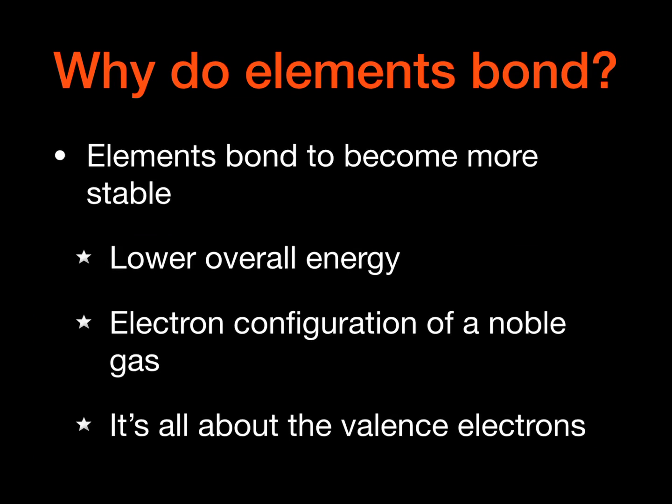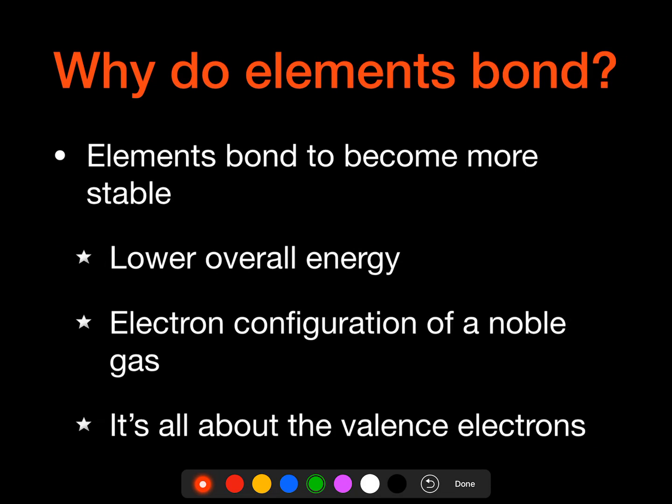And so they're going to do something with their valence electrons in order to look more like the noble gases. So we're going to do something with these valence electrons to look more like a noble gas. And so the things that we tend to see them do are to either gain, lose, or somehow share valence electrons to get to that noble gas electron configuration.